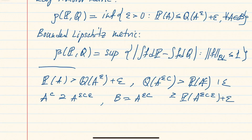Otherwise everything else is straightforward — you can read in the notes how you prove that these two are indeed metrics on the set of all probability measures on our metric space S.